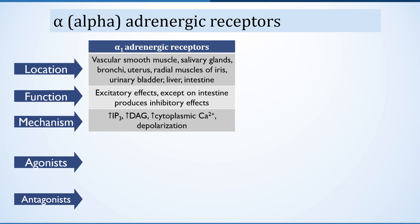Alpha-1 adrenoceptors are located postganglionically at vascular smooth muscle, salivary glands, bronchi, uterus, radial muscles of the iris, urinary bladder, liver and intestine. They produce excitatory effects except on the intestine, where they produce inhibitory effects. The excitatory effects are through kinase-linked receptors, where they increase the concentration of IP3, DAG and cytosolic calcium, responsible for depolarization. The inhibitory effects are through G-protein coupled receptors.